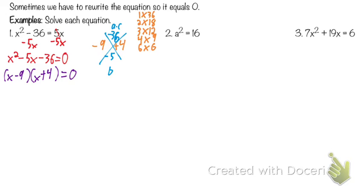Now do we have multiplication that equals zero? Yes. So when we have multiplication that equals zero, we're at the point where we can make our two equations. What's the first equation? X minus 9 equals zero — because we take each factor and set it equal to zero. If things multiply to equal zero, at least one of them has to be zero.